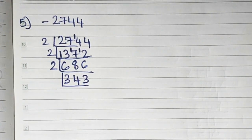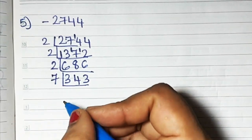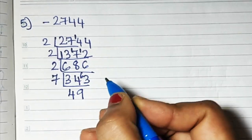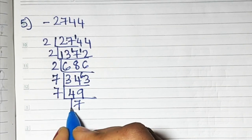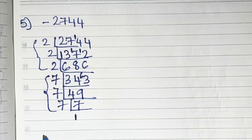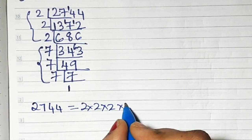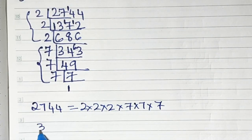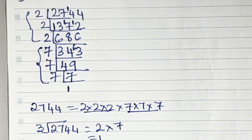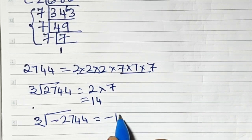Now 7 is the cube root of 343 — that's why I told you to learn up to 10, so that things become easier for you. Taking 7 directly and completing the division, we find the factors of 2744 are 2 × 2 × 2 × 7 × 7 × 7. So cube root of 2744 = 2 × 7 = 14. But since we need cube root of minus 2744, the answer will be minus 14.